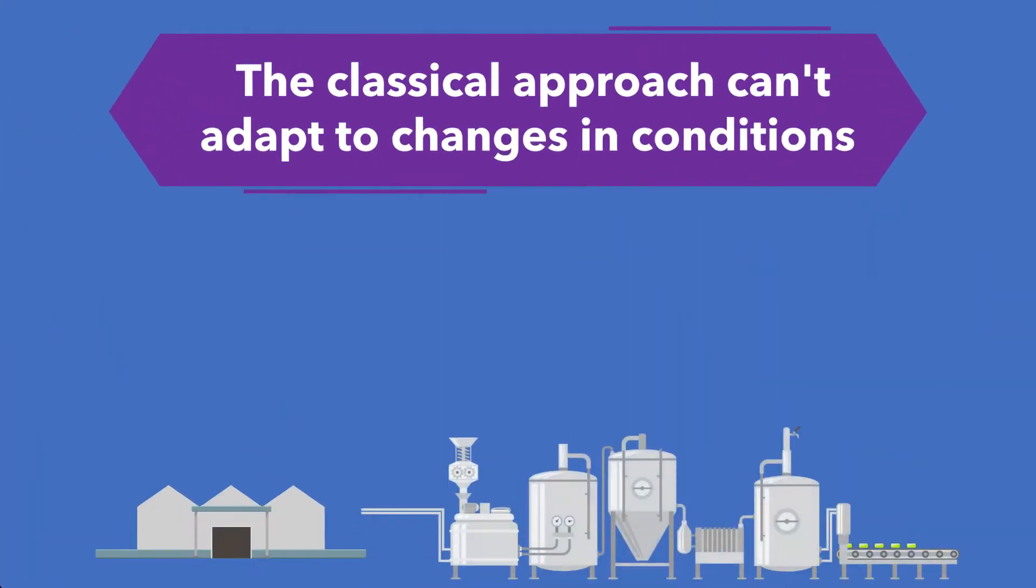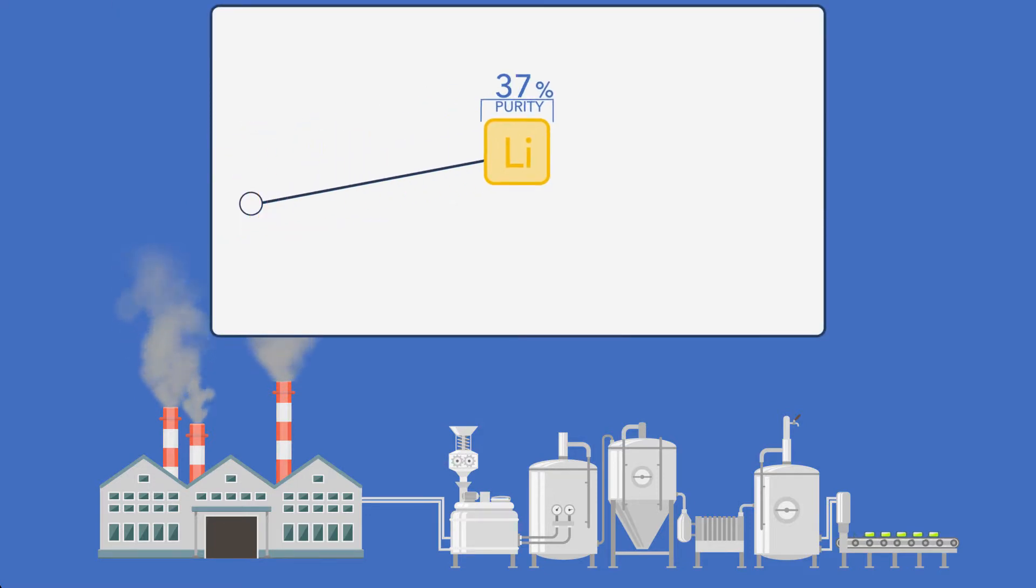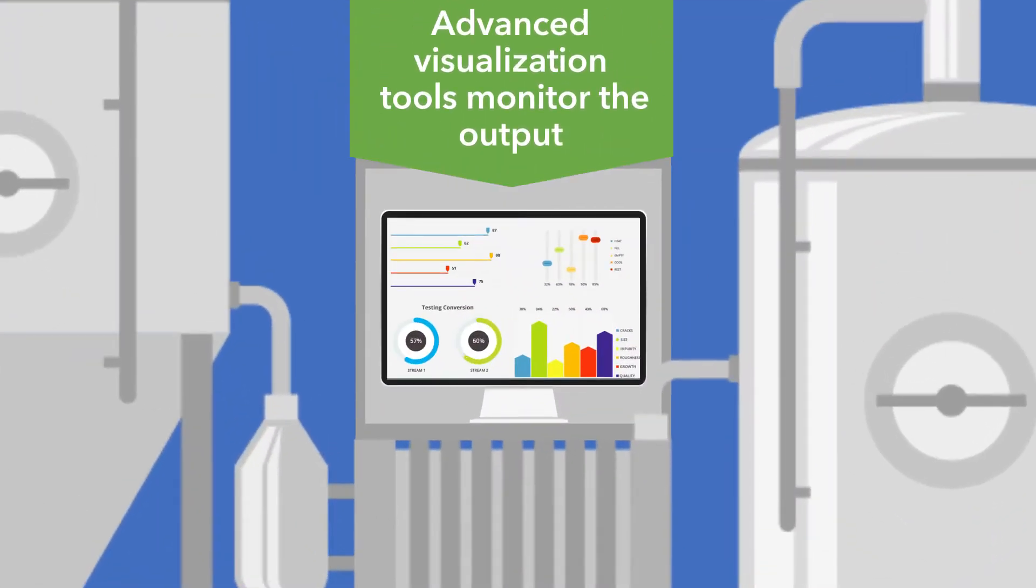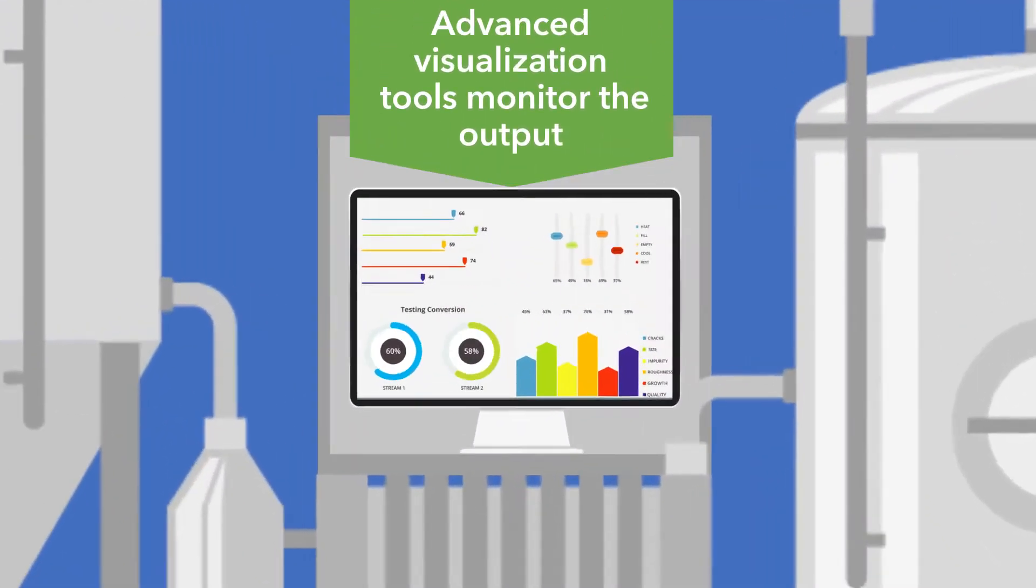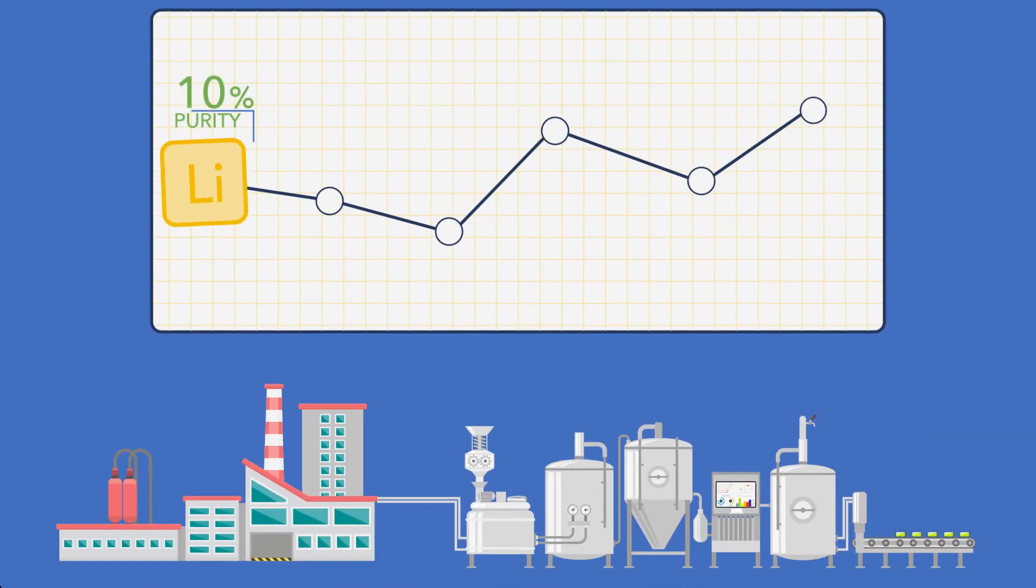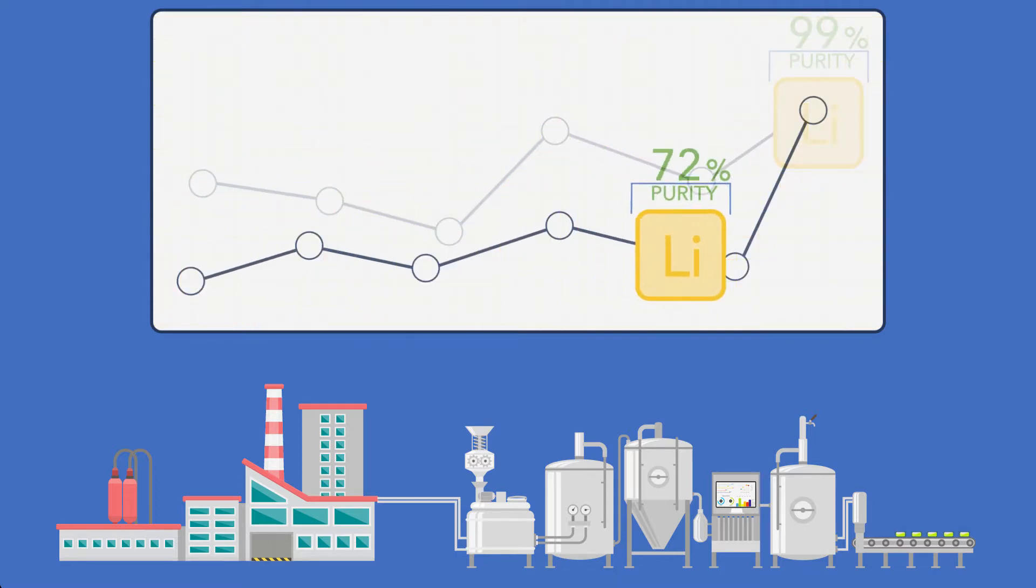The classical approach can't adapt to changes in conditions and raw materials, and generates variable-quality products. Our process uses advanced visualization tools to monitor the output. Processing conditions are automatically adjusted to optimize product quality in real-time, allowing us to produce lithium at over 99% purity the first time and every time.